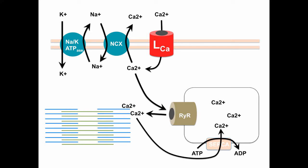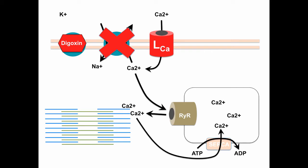Digoxin selectively inhibits the sodium-potassium ATPase pump, leading to increased intracellular sodium. This inhibits the sodium-calcium transporter, which relies on sodium gradients to function. Inhibition of the sodium-calcium transporter leads to increased intracellular calcium, which in turn leads to increased uptake by the sarcoplasmic reticulum via the SERCA pump, and also increased amounts of calcium at contractile elements. All of these events lead to increased intracellular calcium and increased contraction of myosin filaments — this is how digoxin increases contractility. The L-type calcium channel plays a central role in this process.